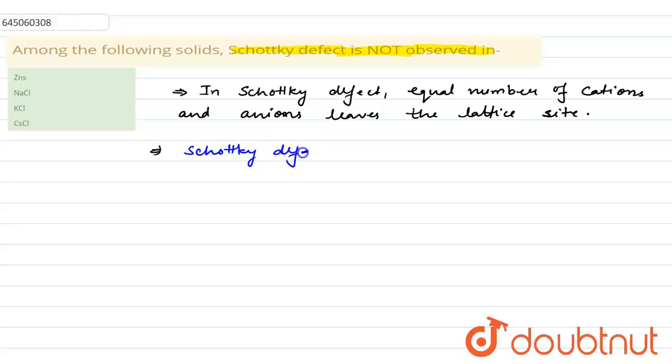Schottky defect is shown by those solids which have almost equal size of cation and anion.